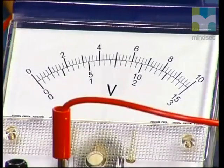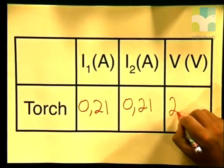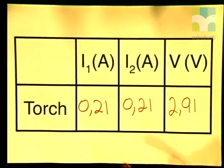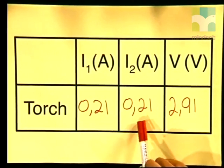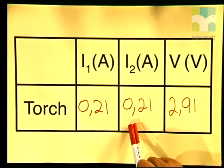I am now going to take my reading of potential difference across the light bulb. I have connected a voltmeter in parallel in my circuit. Closing the switch — the voltmeter is reading 2.91 volts. So in my final column for the voltage: 2.91 volts. Now what did you notice about the ammeter readings in the two different positions? I1 and I2 are both reading 0.21 amperes, which means that the current is the same throughout the circuit.